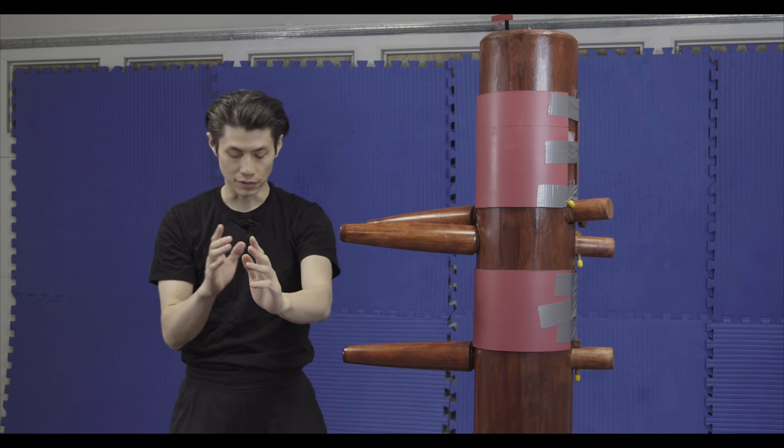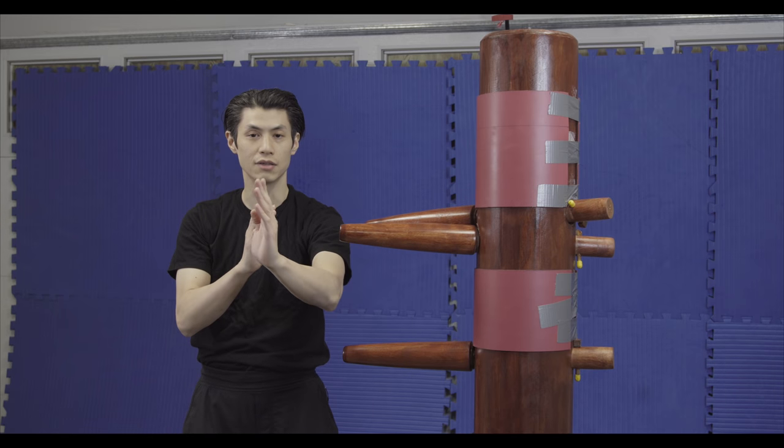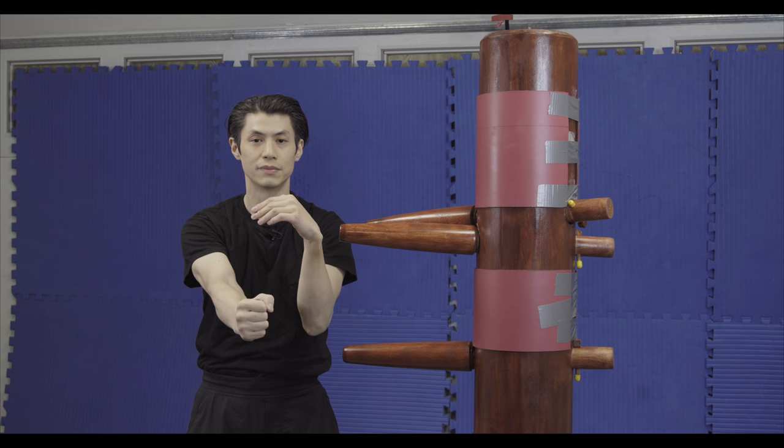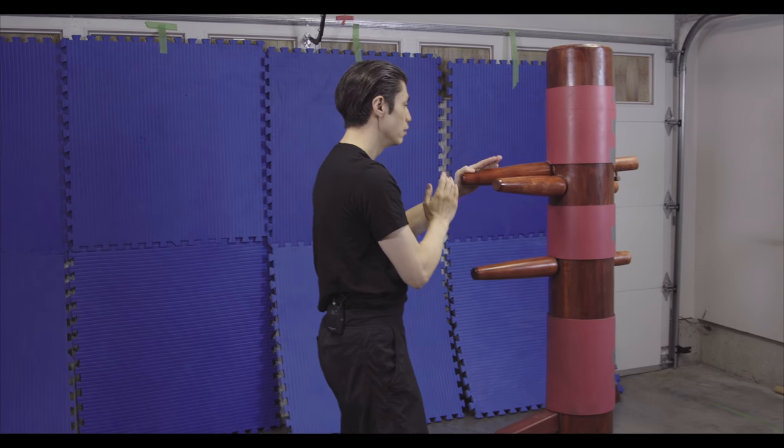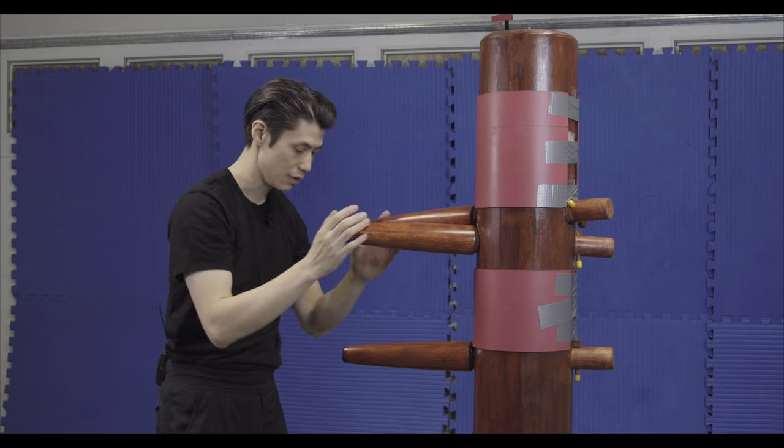So if you look from the front it's going to look like this. So I end up here, I'm going to go out and then I go pak on the outside, fook sau and punch. Okay, so and then the outside fook sau punch. Okay so I end up here, so just go one two three. Okay so that's what I'm doing again, one two three.